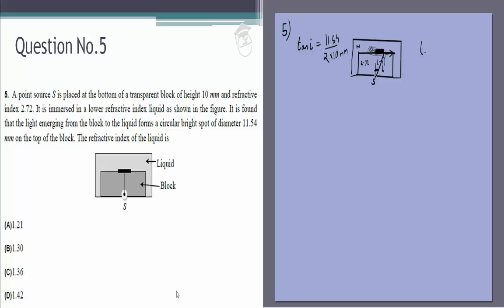So tan i is equal to 11.54 by 20. Now we are asked what is the refractive index of the liquid and that's easy enough. If this i is the critical angle, that is the angle at which total internal reflection takes place,